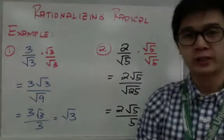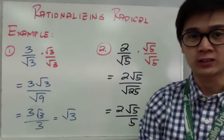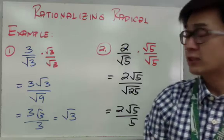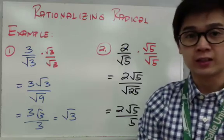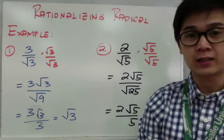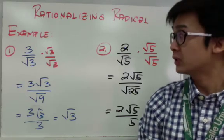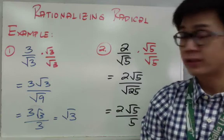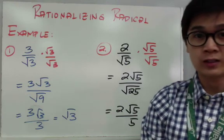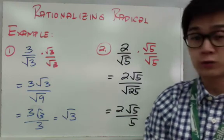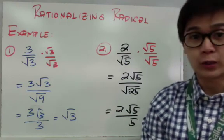In trigonometry, it's important you know how to rationalize fractions. Rationalizing a fraction is basically getting rid of your radical in your denominator. I have two examples: 3 over the square root of 3, and 2 over the square root of 5, and we're going to rationalize them.